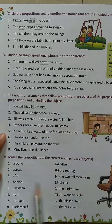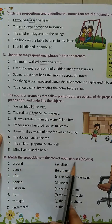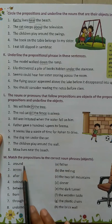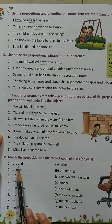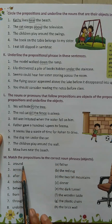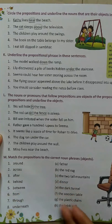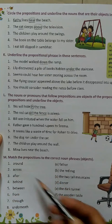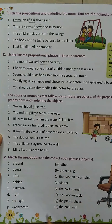Next question: match the preposition to the correct noun phrase. Preposition ko object se match karna hai. So: around, across, after, behind, between — you will match these columns.